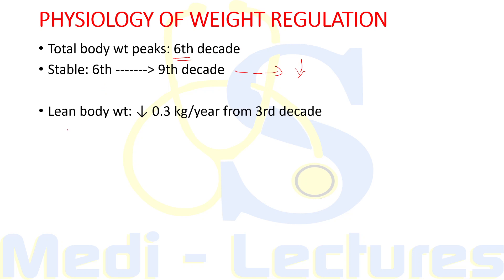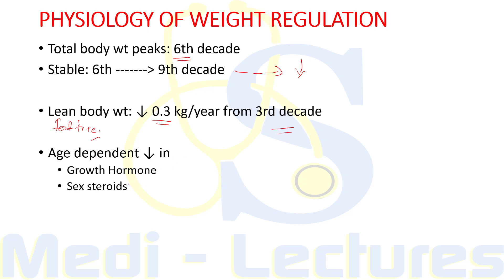In contrast, when we talk of lean body weight, which is fat-free body weight, this begins to decline at a rate of 0.3 kg per year starting from the 3rd decade, and this rate further increases with increasing age. These changes in lean body mass largely reflect the age-dependent decrease in growth hormone leading to decreased IGF levels as well as a decrease in sex steroids.